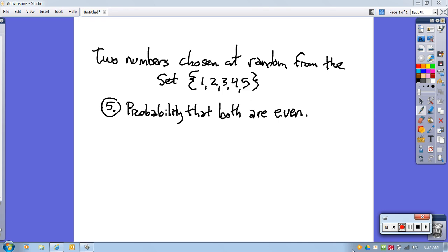This is Math 107, practice test 3, problem number 5. Two numbers are chosen at random from this set, and we're supposed to find the probability that both numbers are even.